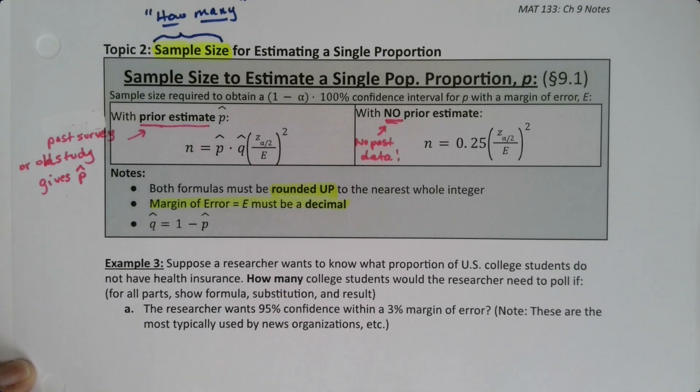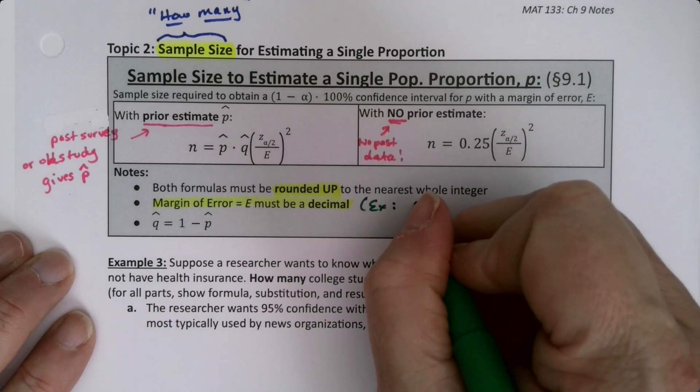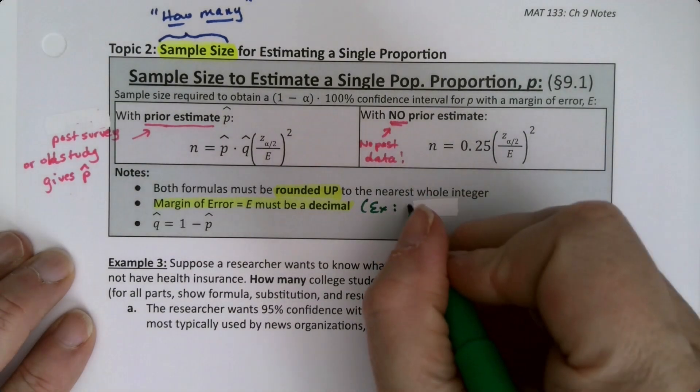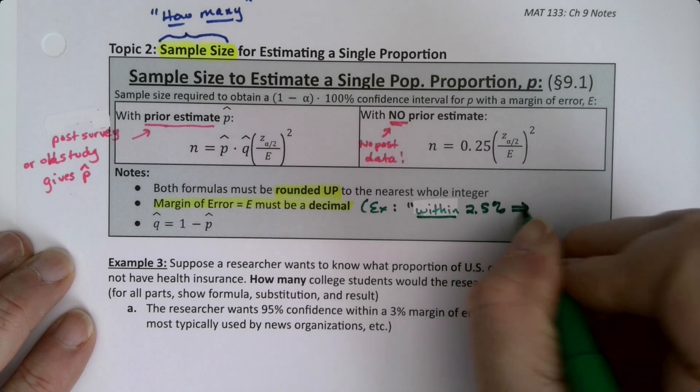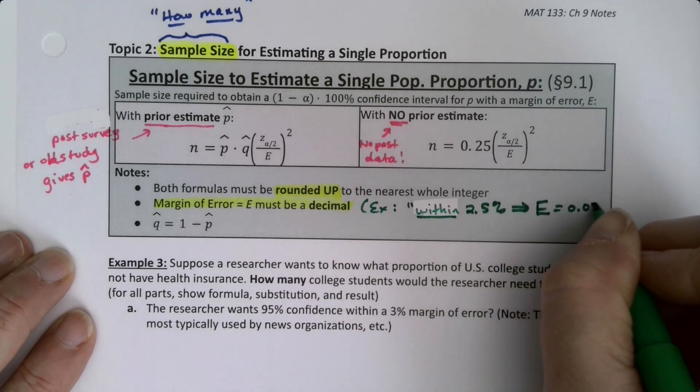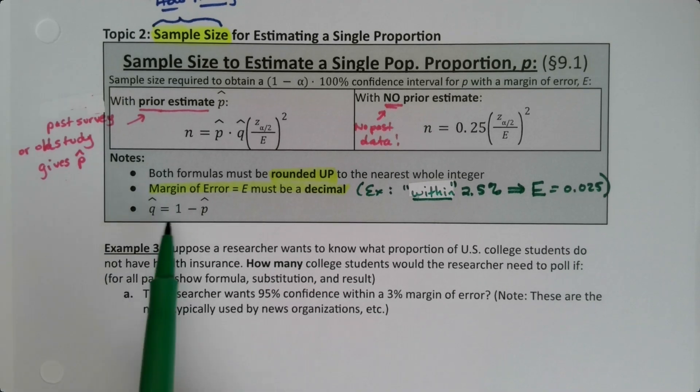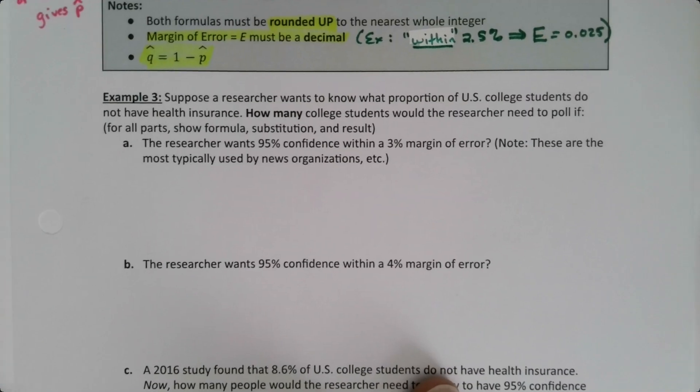In this particular case, the margin of error has to be a decimal. It's often written as a percentage, so if they say within 2.5 percent, that means error is 0.025. The word 'within' cues that it's the error. When they say it as a percentage, you have to write it as a decimal. Just a reminder that Q-hat is 1 minus P-hat.